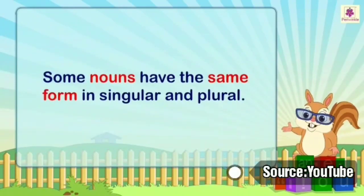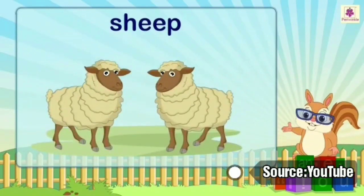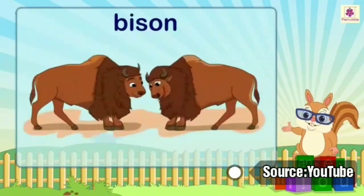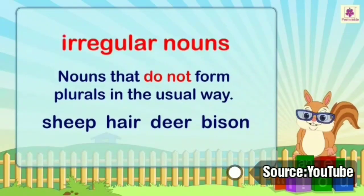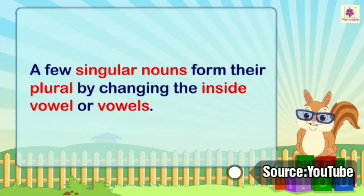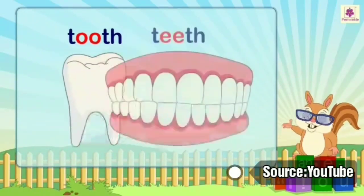Some nouns have the same form in both singular and plural. For example: sheep, head, deer, bison. Nouns that do not form plurals in the usual way are called irregular nouns. A few singular nouns form their plural by changing the inside vowel or vowels. For example: man → men; tooth → teeth.